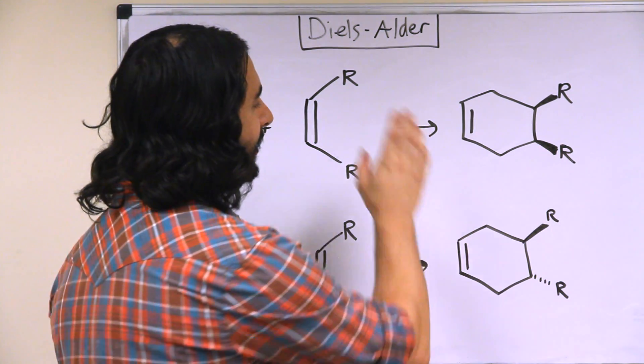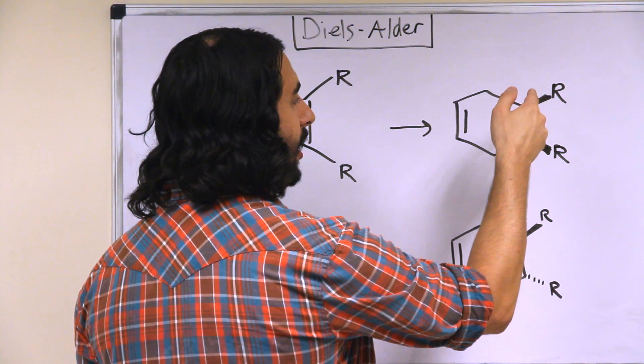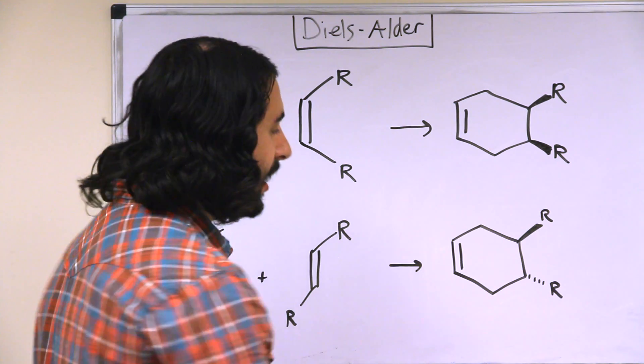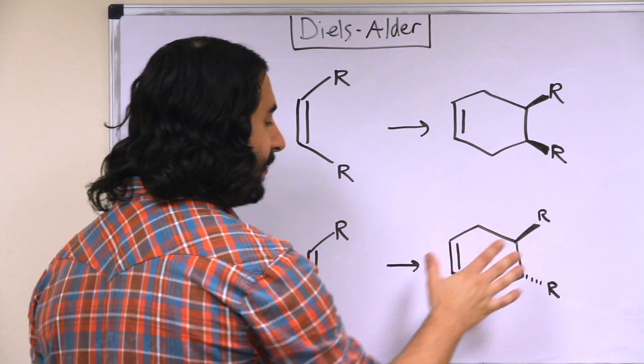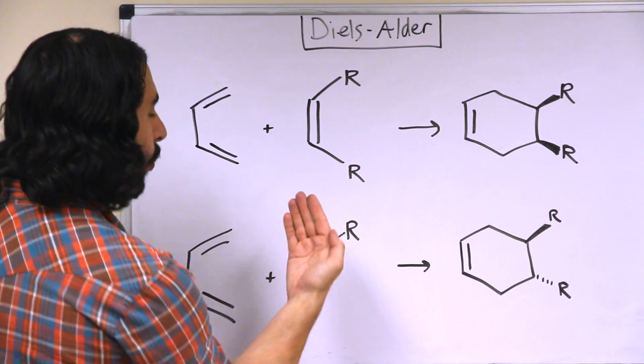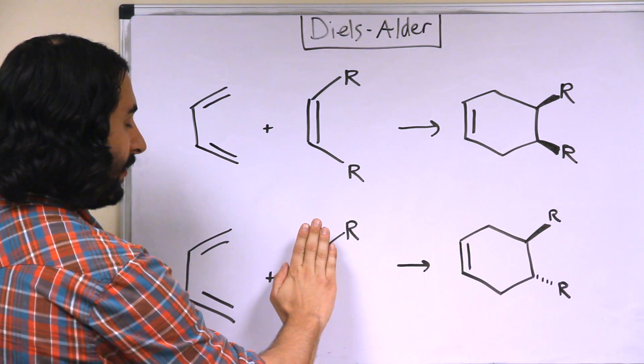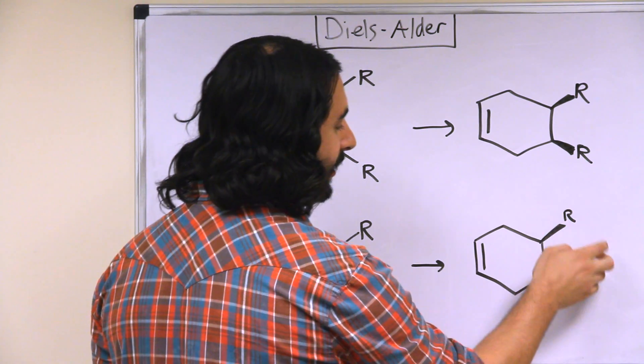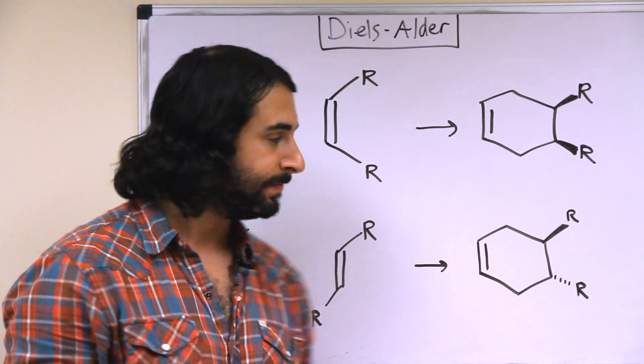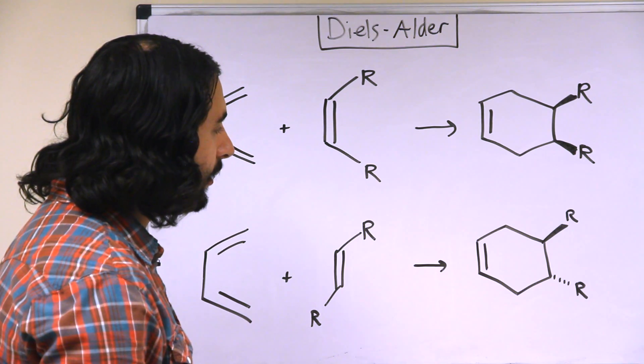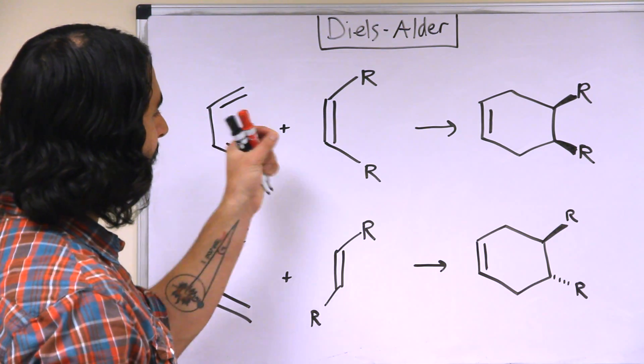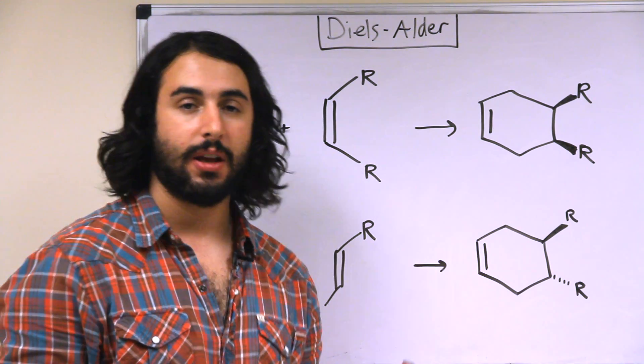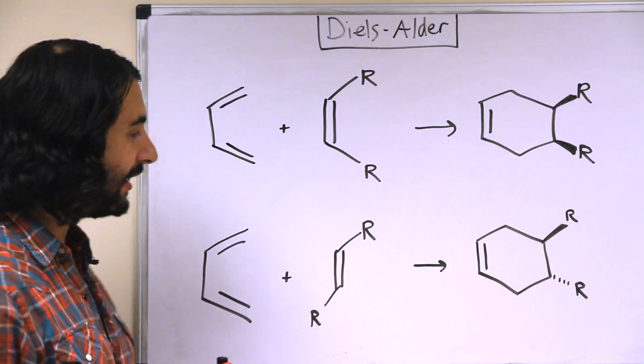However, whereas this is certainly stereospecific because cis on this side or the other would yield the same product, here there is still an element of variability depending on which face of the alkene is approached. We could have a wedge and a dash here or a dash and a wedge and those would in fact be two different molecules. So once again, cis alkenes add syn and trans alkenes add anti.